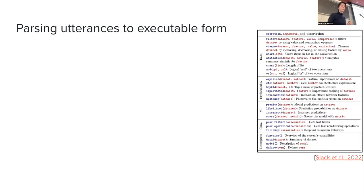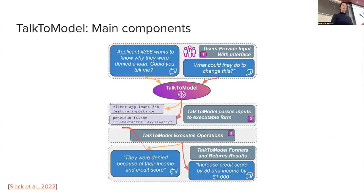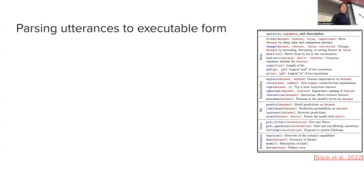The first part we need to do is: given this variety of utterances — such as 'could you tell me why they were denied a loan and what could they do to change this?' — you need to parse this into something you can actually call from the command line. What they did in this paper is they developed a grammar to represent what they think are all the functions needed in this interaction.